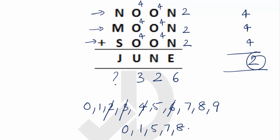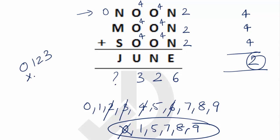And the remaining digits are 0, 1, 5, 7, 8, 9. In these remaining digits, we have to make a trial for N, M and S. We cannot keep this value as 0 because it is a starting digit. As you all know that starting digits cannot be 0.